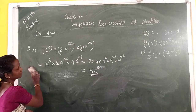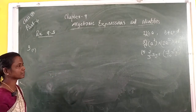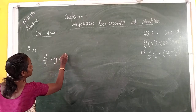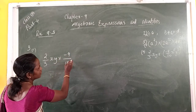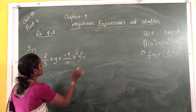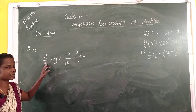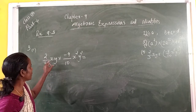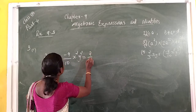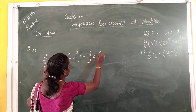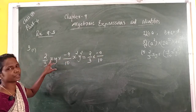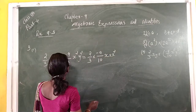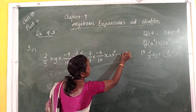Second question: (2/3)XY multiplied by negative (9/10)X²Y². First, we multiply the numerical factors: 2/3 into negative 9/10. Then we write X into X² for the X variables, and Y into Y² for the Y variables.